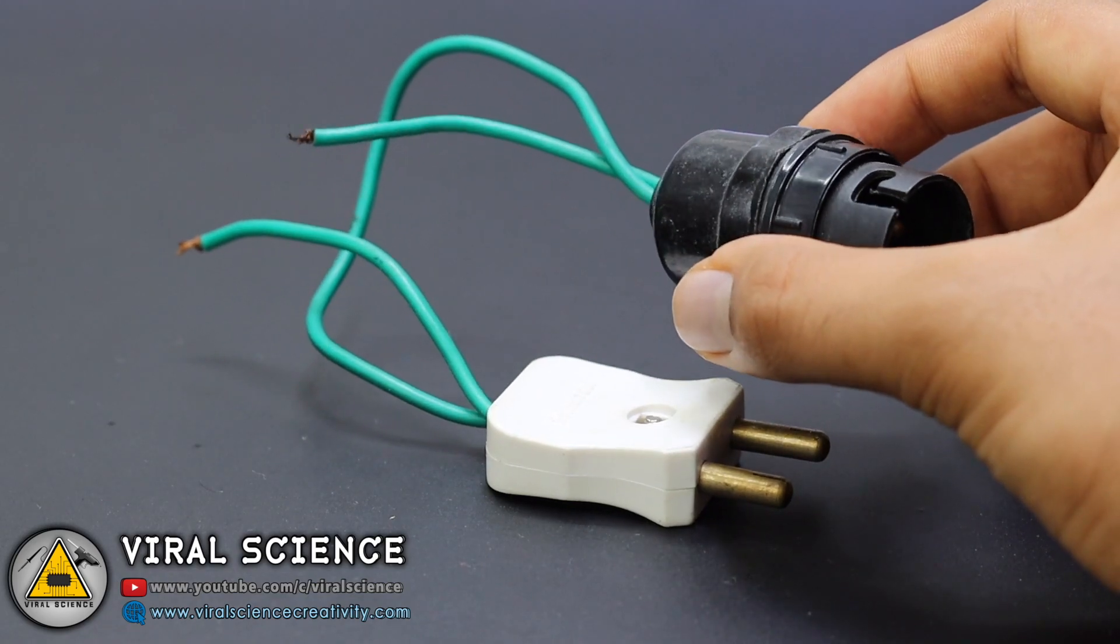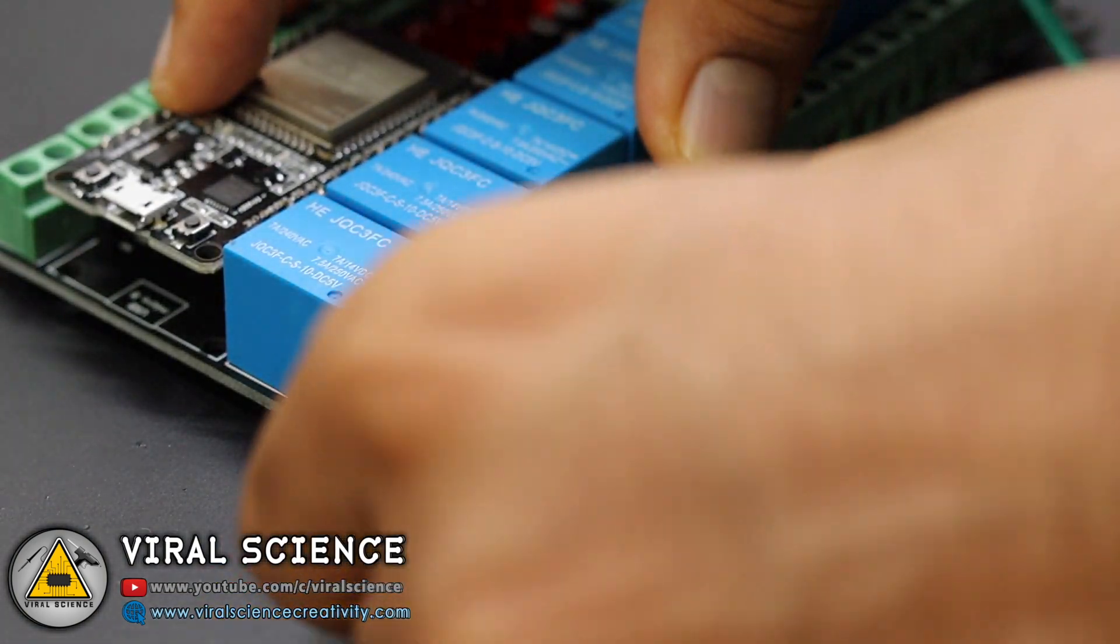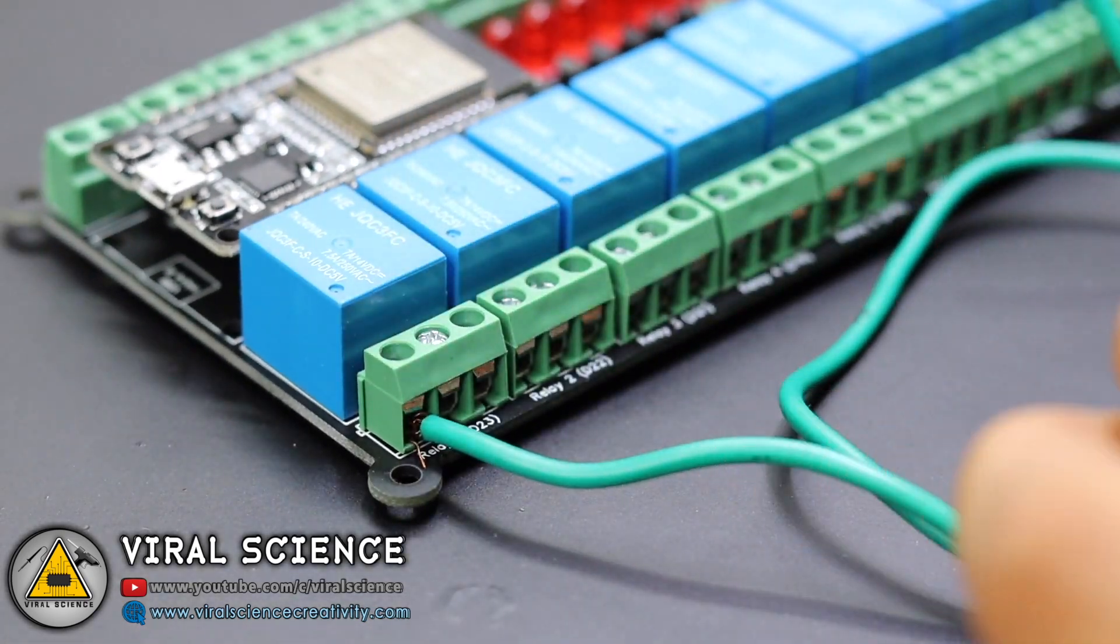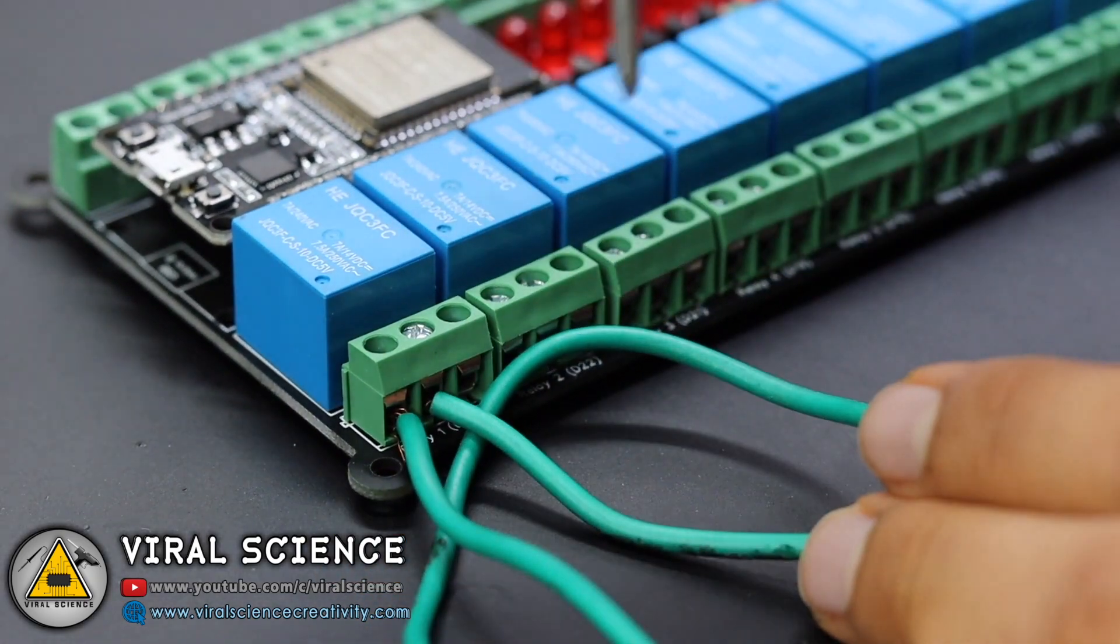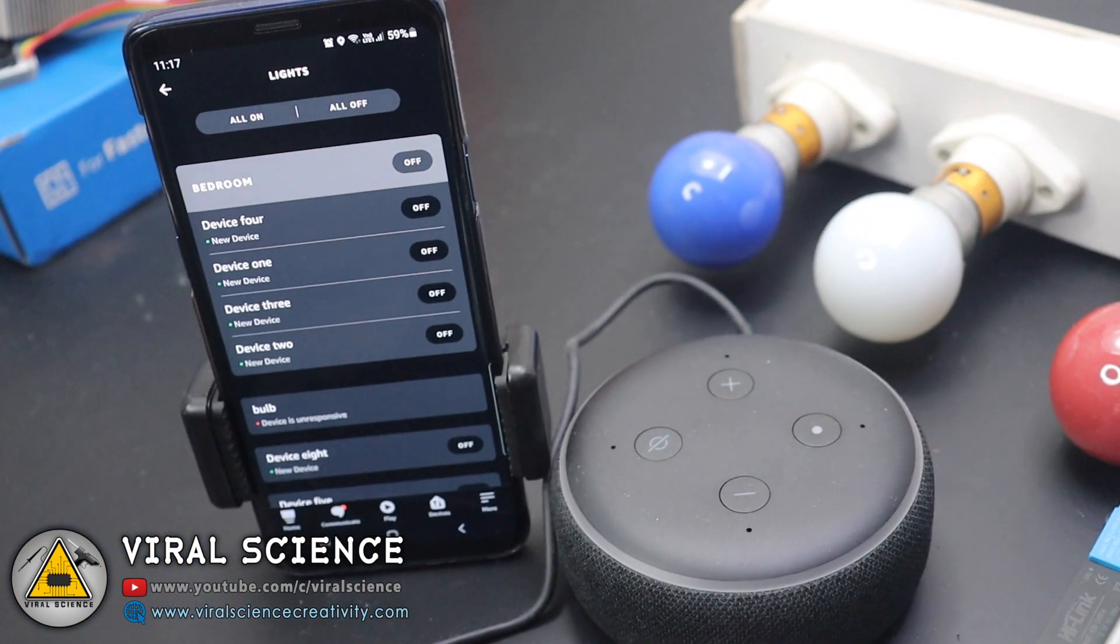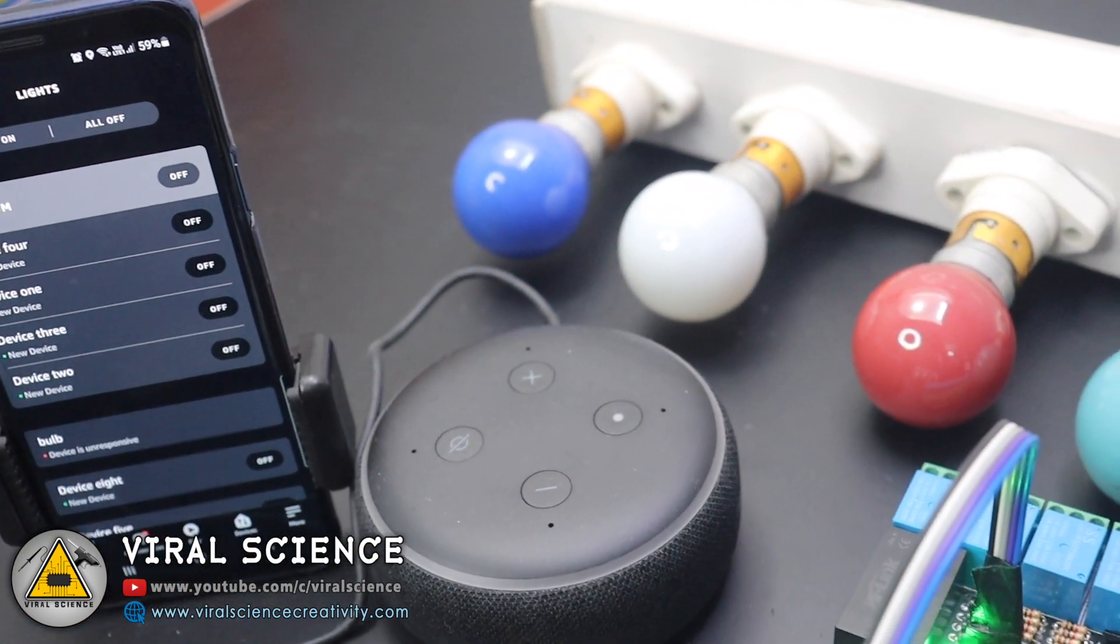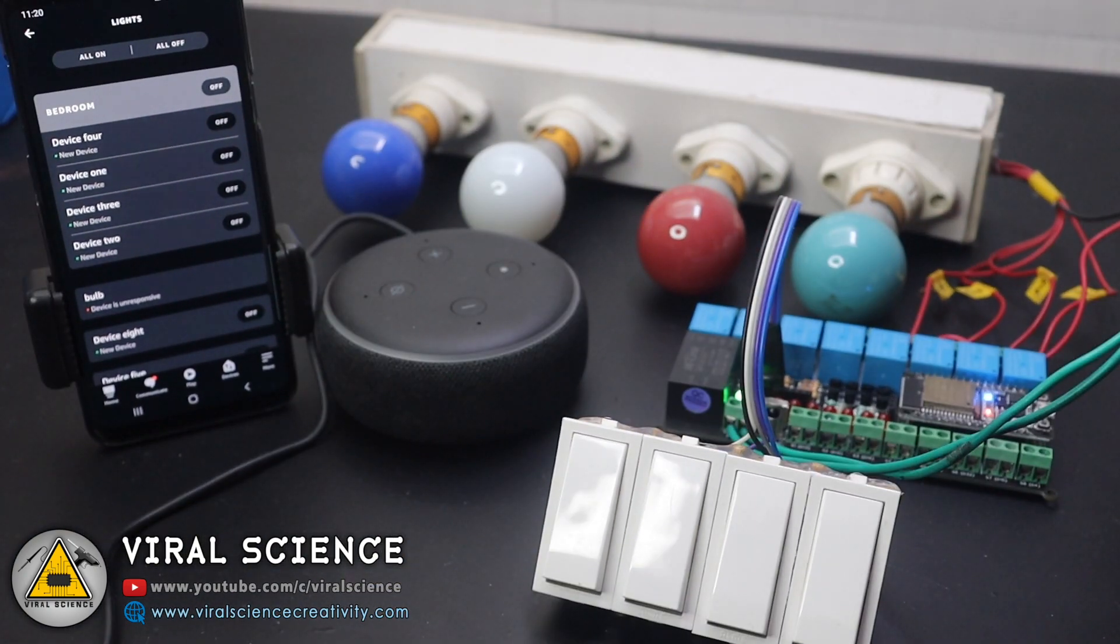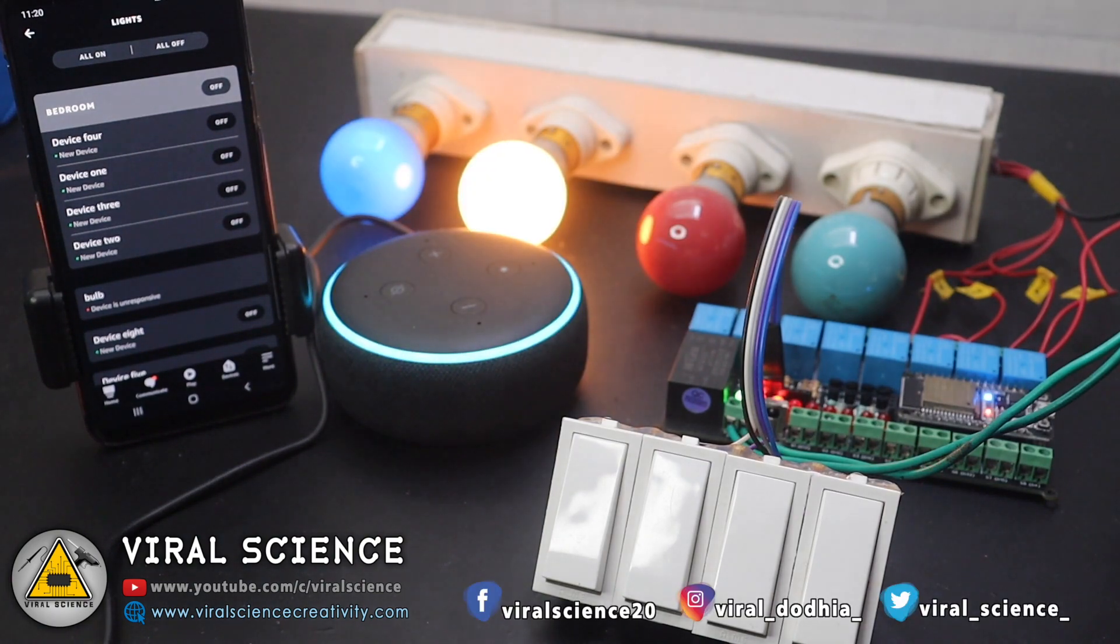So now we'll connect a bulb holder. Connect one of its ends and connect it to the relay plugs. Now I have set up everything on my desk. I even connected the switches to my PCB board and you can see the blue light on ESP32 board, which means the WiFi is connected. Alexa, turn on device one. Okay. Alexa, turn on device two. Okay.